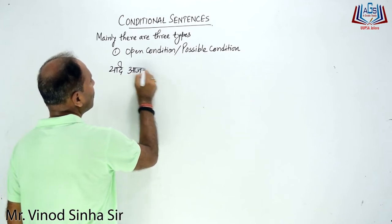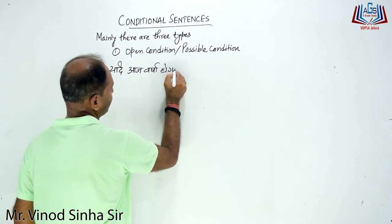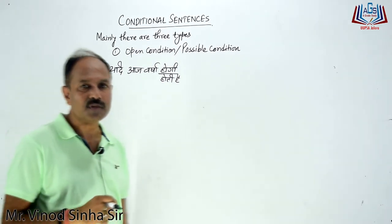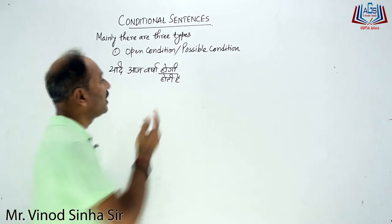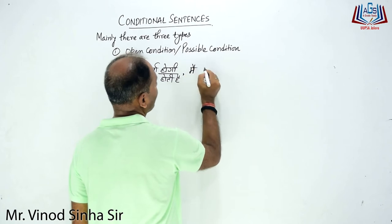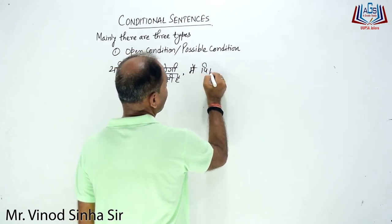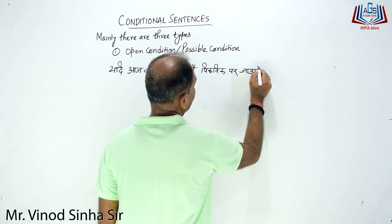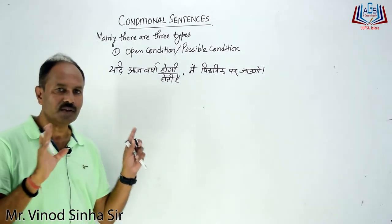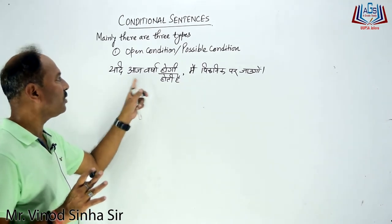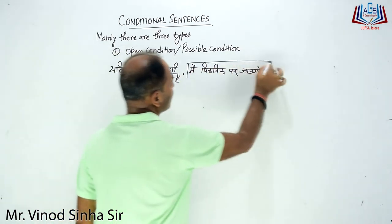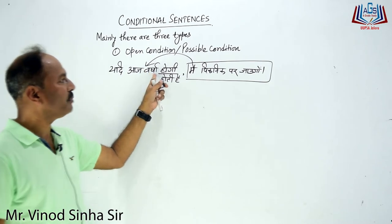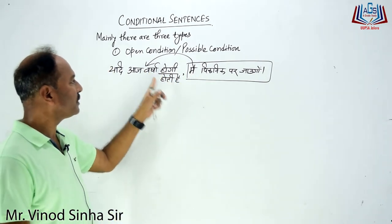For example in Hindi: 'Yadi aaj varsha hogi' — if it rains today — 'toh main picnic par jaoonga' — I will go on a picnic. The condition is rain happening. If I write it according to the future, I use future simple; if according to present, I use present simple. So if clause: present simple; main clause: future simple.